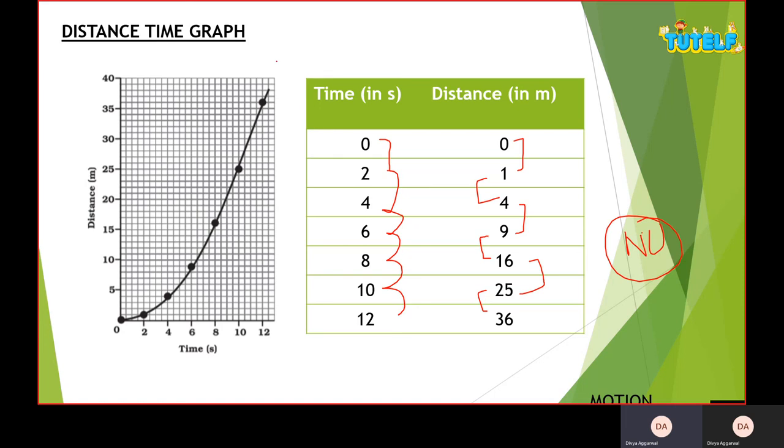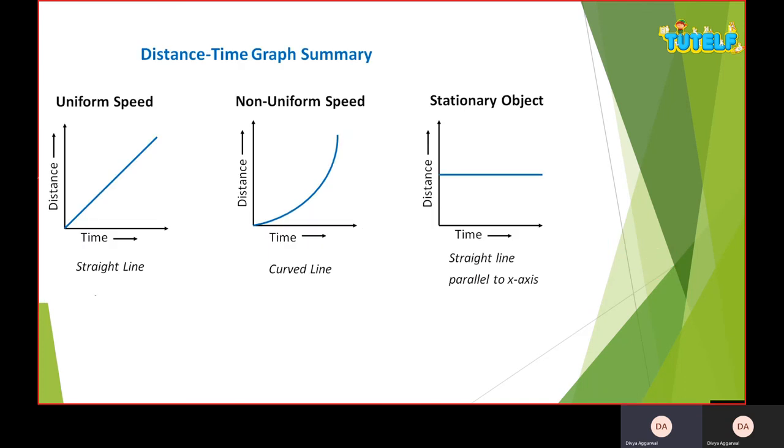Now we will do x-axis, y-axis, x for time, y for distance, plot points and join points. Now you can see that it is not a straight line, it is a curved line. So when we have non-uniform motion, the graph comes to a curve. So let's do a quick summarization.